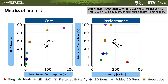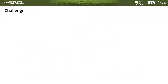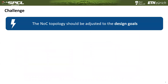However, each of these topologies only provides a rigid trade-off between cost and performance. So if, for example, our design goal is to build a chip where the network on chip occupies at most 40% of the area, but for this area budget we want the highest possible performance, then we are limited with the choice of topologies that we have. This raises a first challenge: namely that the network on chip topology should be adjusted to our design goals.